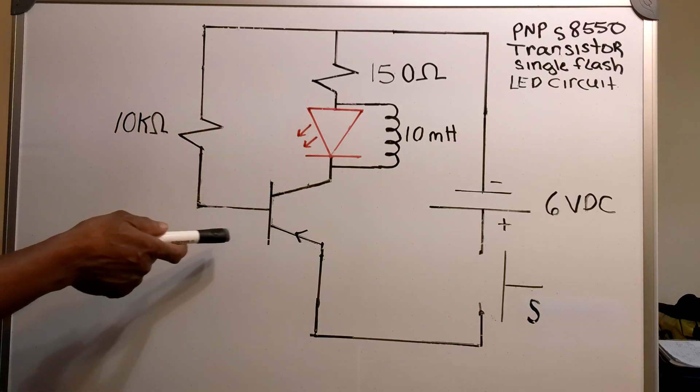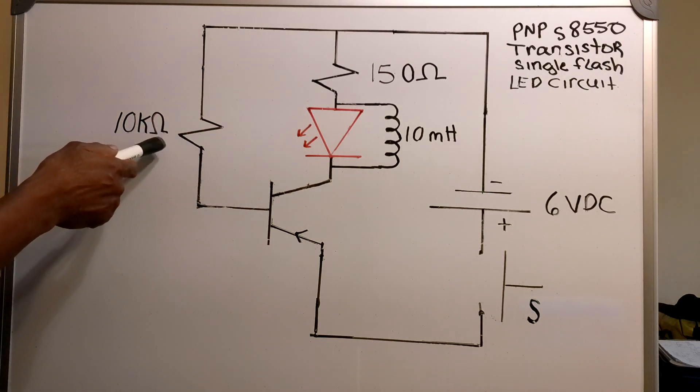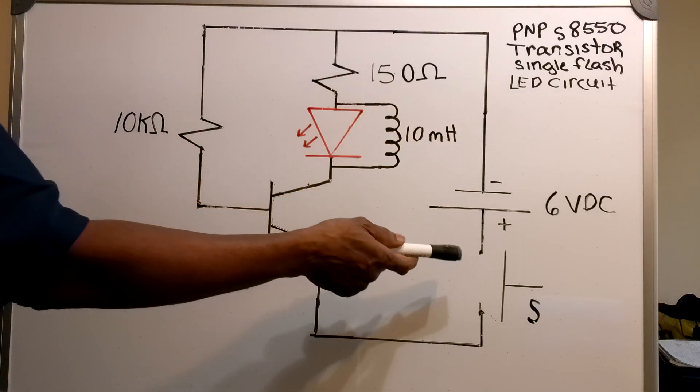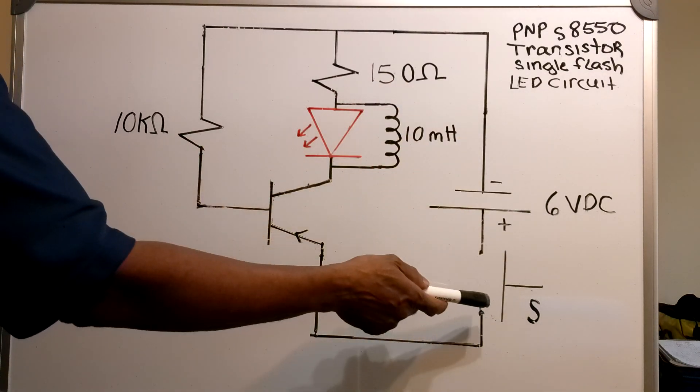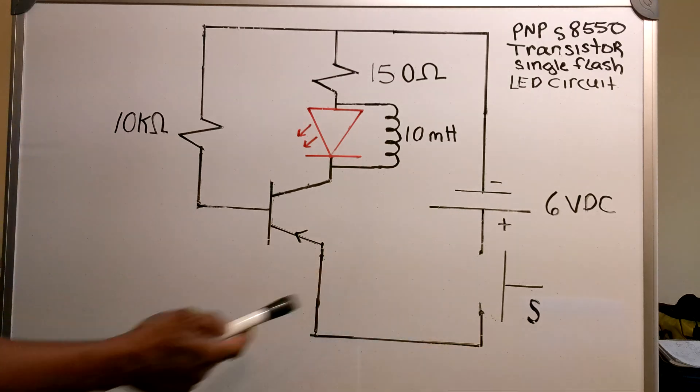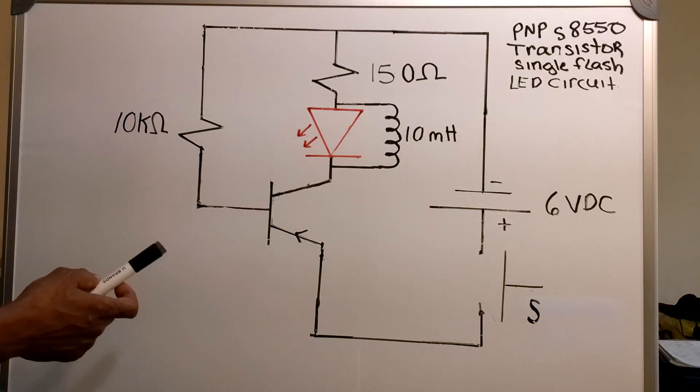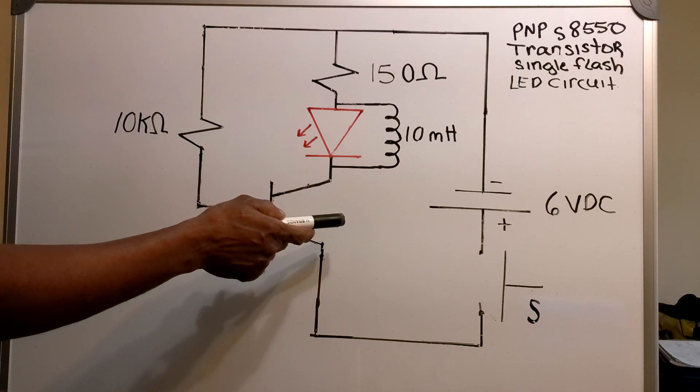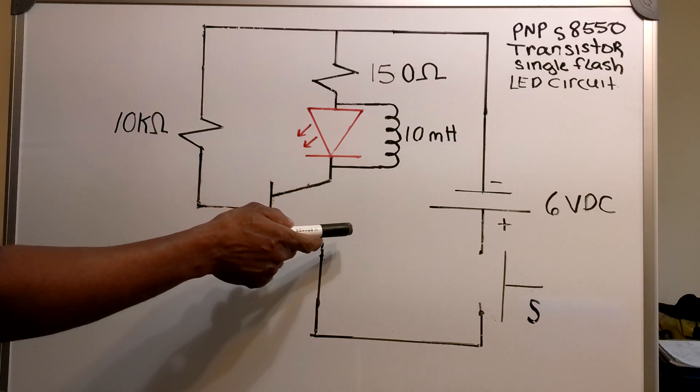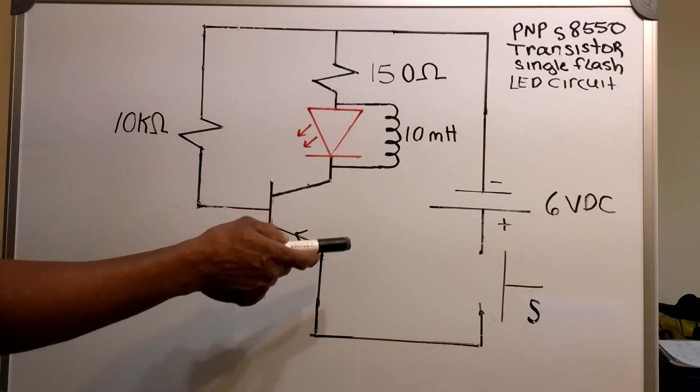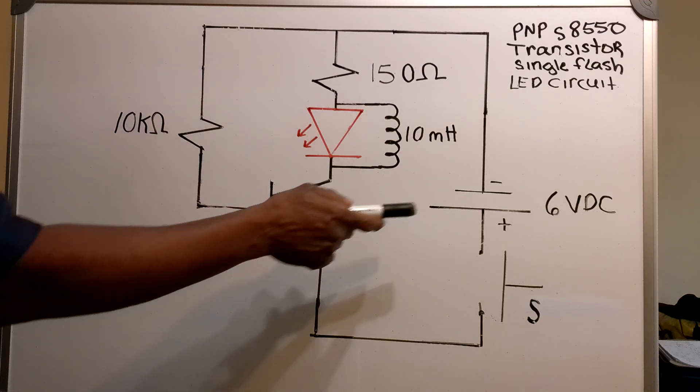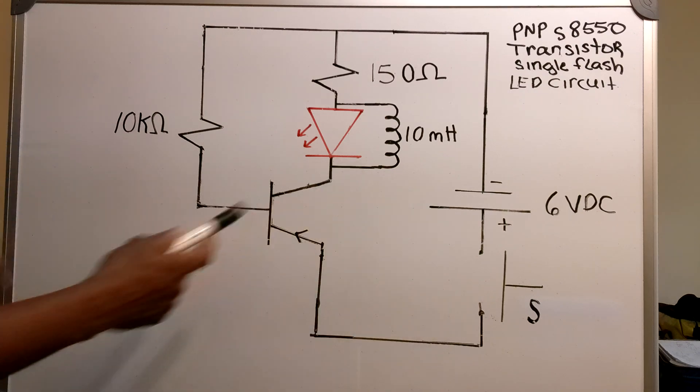On the base I've got a 10k ohm resistor. Across the front of the transistor I've got a 6 volt source in series with a switch. Now what's happening in the circuit right now? The answer is absolutely nothing. Now what I'm gonna do is close that switch.